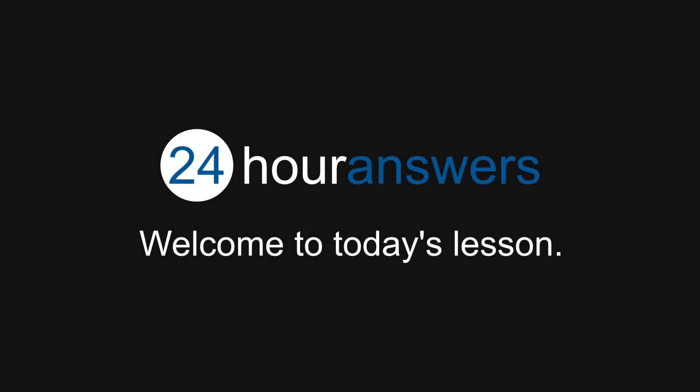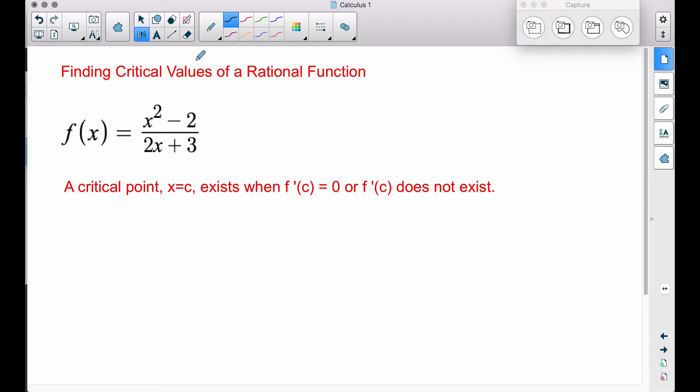On behalf of 24HourAnswers.com, I welcome you to today's lesson. In this video, we're going to find the critical values of a rational function. Recall a critical value or critical point, which we'll call c, x equals c, exists when the derivative at c is equal to zero or the derivative at c does not exist.